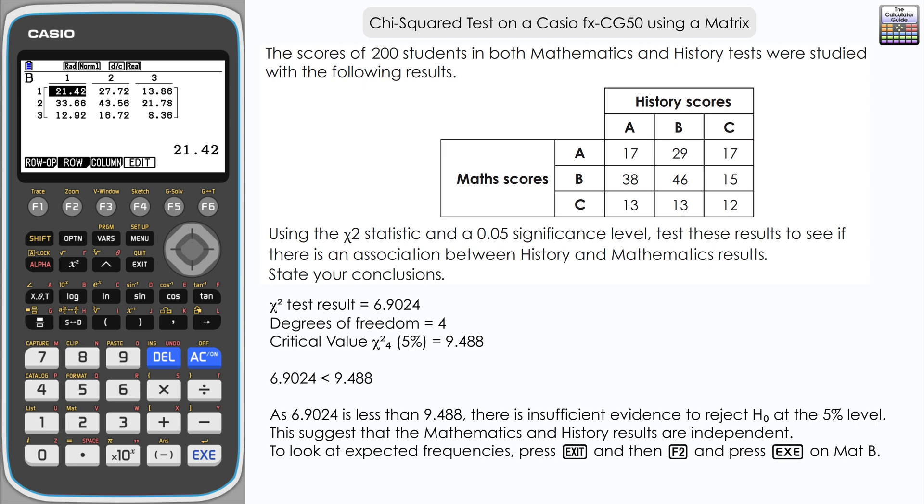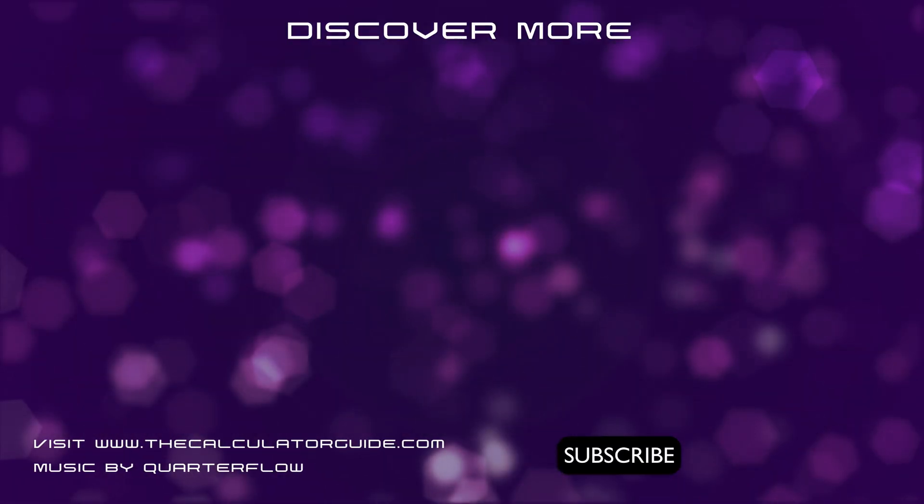There we go - how we can do a chi-squared test with a contingency table using matrix mode and the chi-squared test on the Casio FX-CG50. Don't forget to like and subscribe for future videos. That's it for this video. Thank you very much for watching, and I shall see you next time on the Calculator Guide.